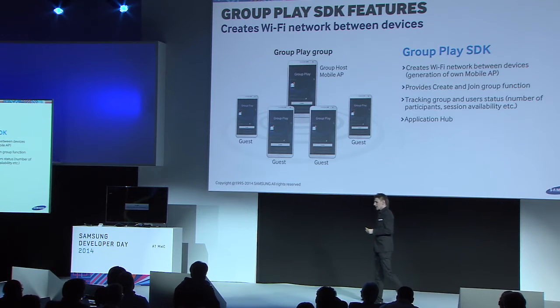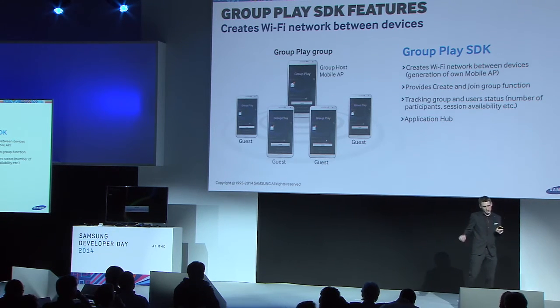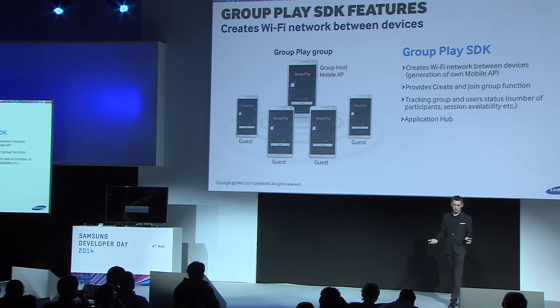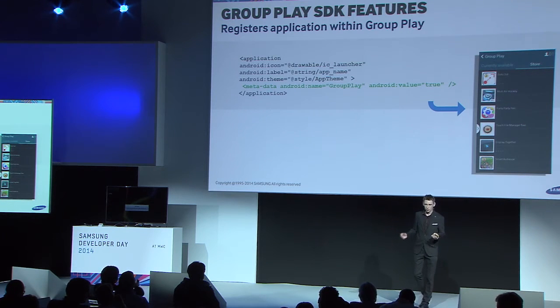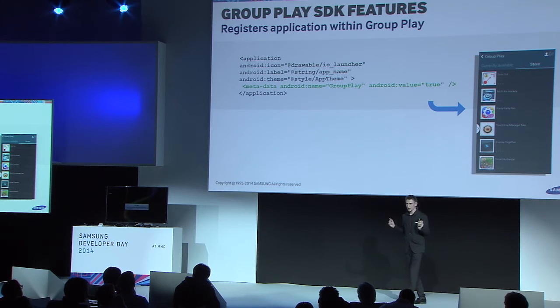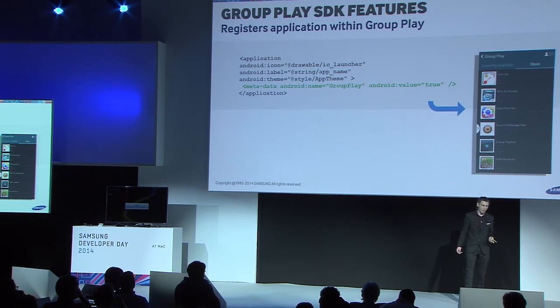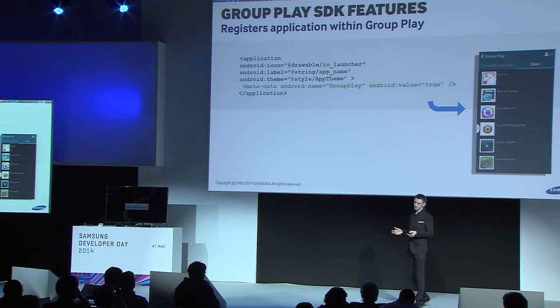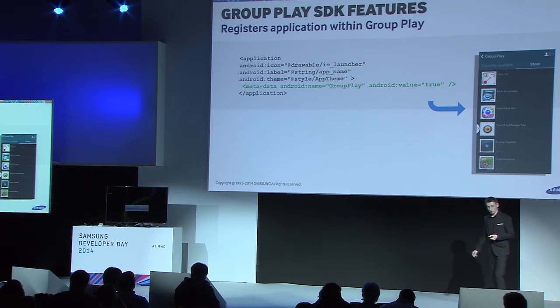The group also tracks user status, like the number of participants and session availability. As I said at the beginning, the SDK utilizes the features of the Group Play application. What's left is an application hub. Here you can see how you can register your application within the currently available applications — specifically, the list of applications installed on your device. All you have to do is add a single line to your Android manifest file: create a new metadata entry with the name 'group play' and the value set to true, and your application will be visible in our application hub.